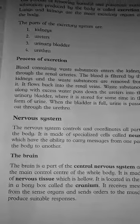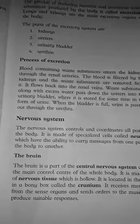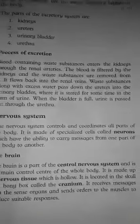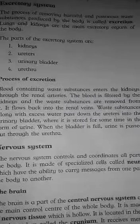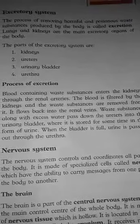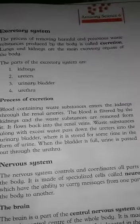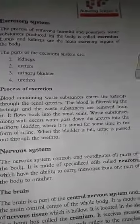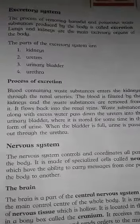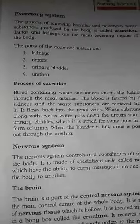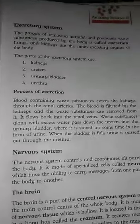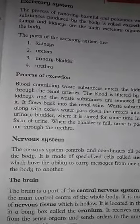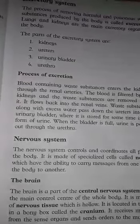What is the nervous system? The nervous system controls and coordinates all parts of the body. It controls the whole body. It is made of specialized cells called neurons, which have the ability to carry messages from one part of the body to another.